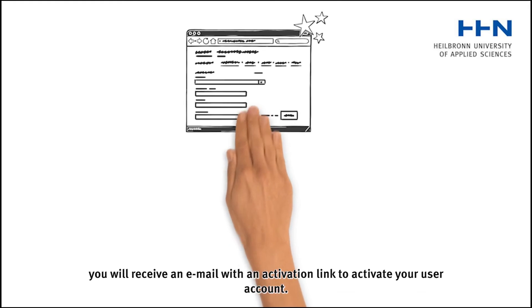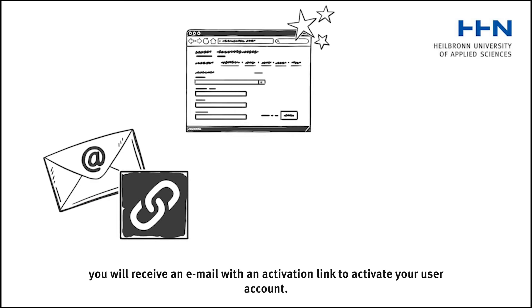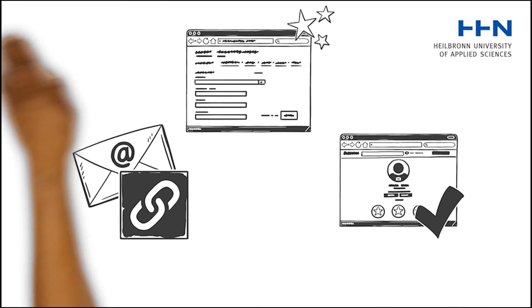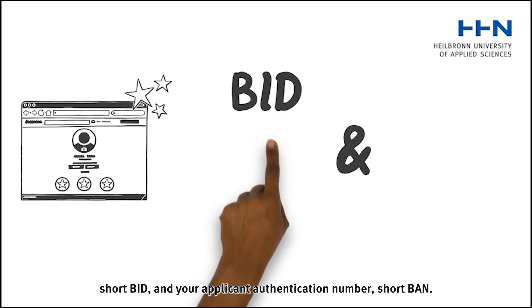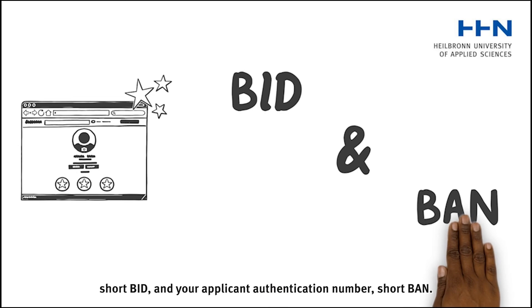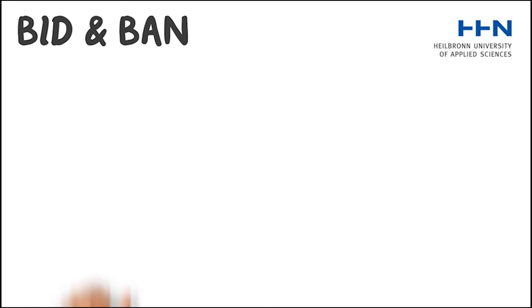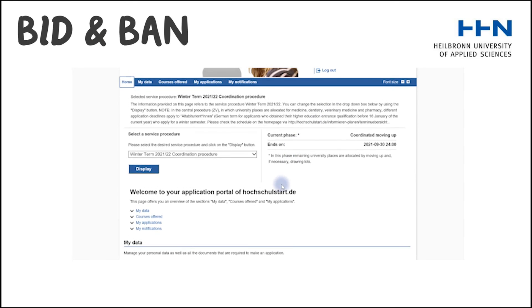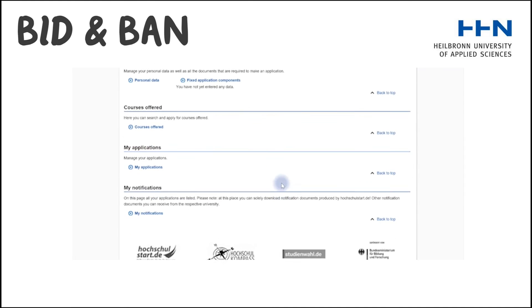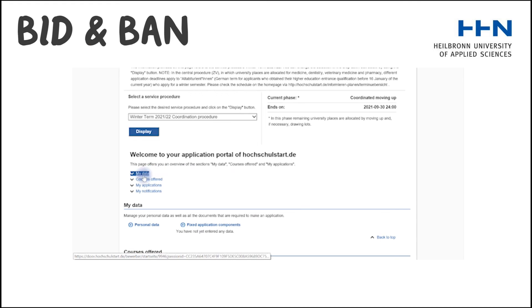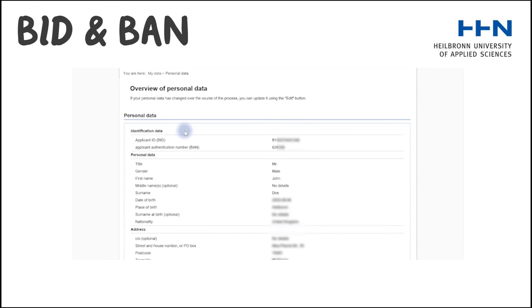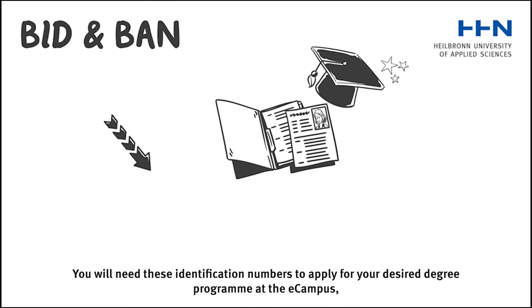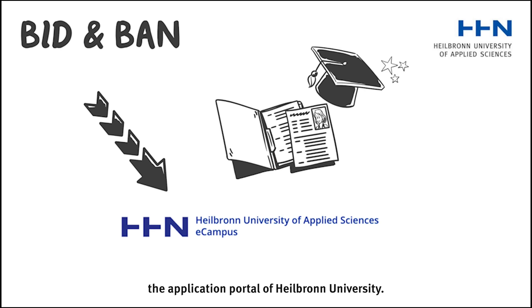After you have signed up successfully, you will receive an email with an activation link to activate your user account. Once you have activated your user account, you can access your personal applicant ID, or BID, and your applicant authentication number, or BAN. Here you can find the two identification numbers in your user account. You will need these identification numbers to apply for your desired degree program at the eCampus, the application portal of Heilbronn University.